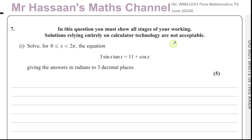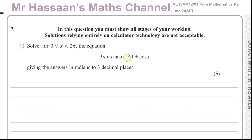Welcome back. This is Mr. Hassan's Maths Channel. I'm now answering question number seven from the June 2024 R replacement paper from the Pure Mathematics P2 International A-Level Edexcel Exam. In this question, we have a trig equation that we have to solve. It says solve for x between zero and two pi: three sine x times tan x equals 11 plus cosine x, giving the answer in radians to three decimal places.